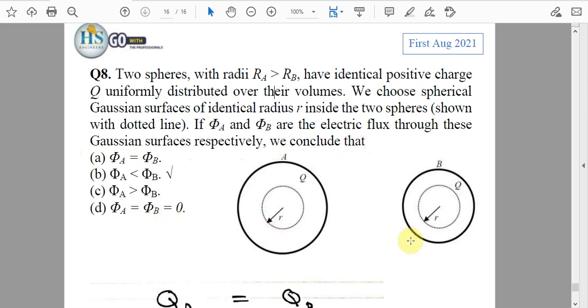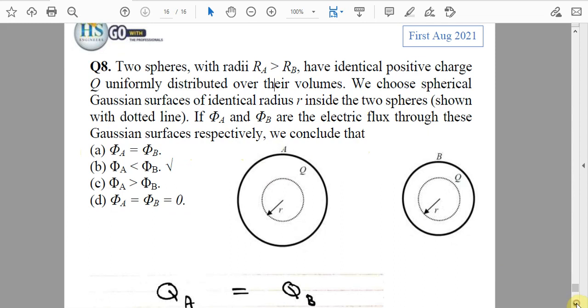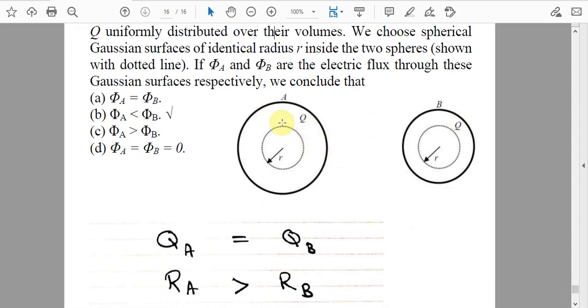For φ_A and φ_B, we have Q_A same as Q_B, but R_A is greater than R_B, meaning volume A is greater than volume B.